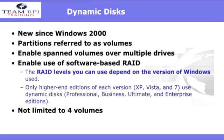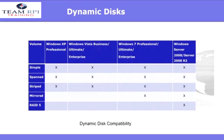Next, let's talk about dynamic disks. Dynamic disks appeared after Windows 2000. Instead of partitions, we refer to them as volumes. Remember, the RAID levels that you choose are dependent on the Windows operating system that you're running. Here's a look at the different types of volumes available depending on the Windows OS you're running — all the way from simple, spanned, and striped from Windows XP Professional, up to simple, spanned, striped, mirrored, and RAID 5 with Windows Server 2000 R2.